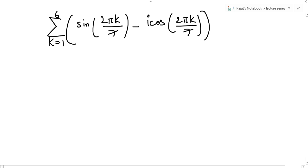The question is, we have to solve for k equals 1 to 6, sine 2 pi k upon 7 minus i cos 2 pi k upon 7. This is sine theta minus i cos theta, and we know that for polar representation it is cos theta plus i sine theta. So what to do?